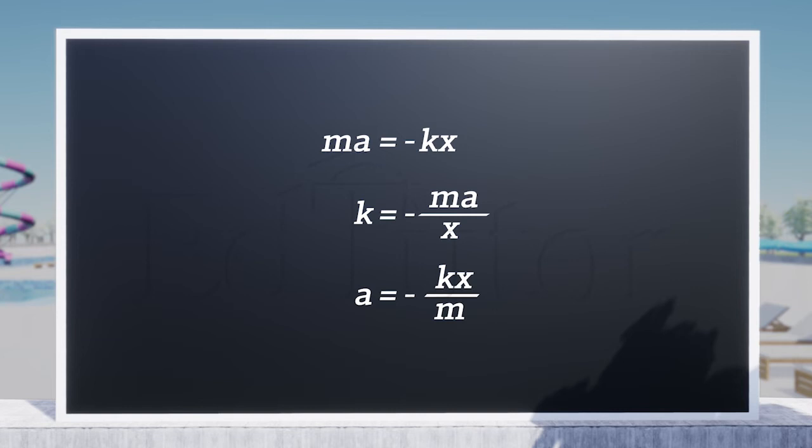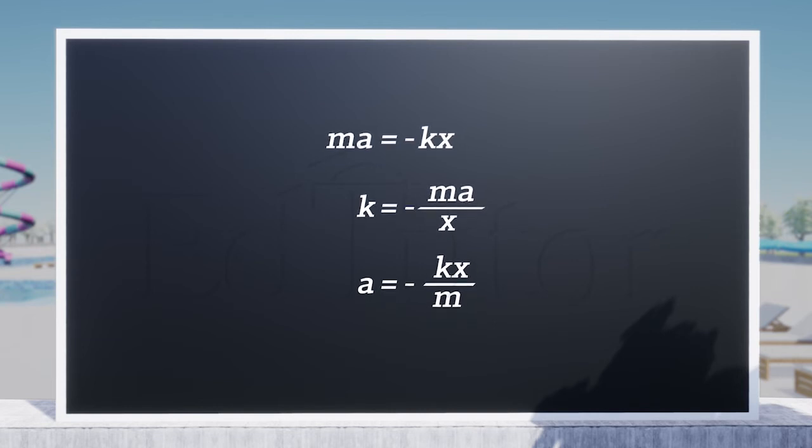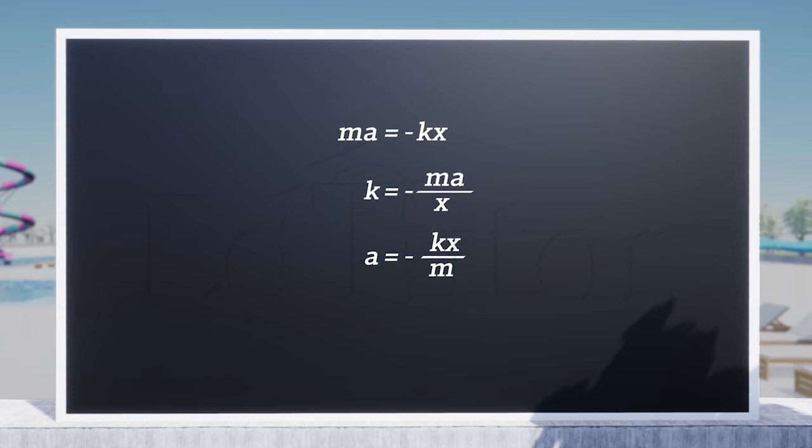Here, k/m is a constant. So if we remove this constant factor, we get the proportionality relationship, which leads us to the result that acceleration a is directly proportional to -x.